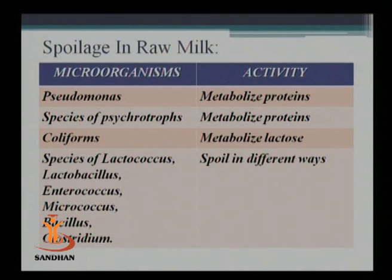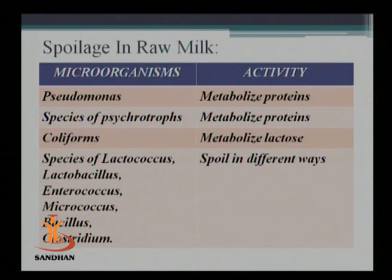Coliforms are going to metabolize lactose. Coliforms are a group of organisms found in the intestinal colonies of the human body — common examples are E. coli and Enterobacter. Their nature is to utilize sugar, and the sugar in milk is lactose sugar. They will degrade lactose and convert it into lactic acid with further degradation, producing acids in the milk. Other species — Lactobacillus, Enterococcus, Micrococcus, Bacillus, and Clostridium — also spoil milk in different ways.